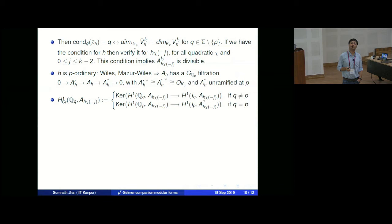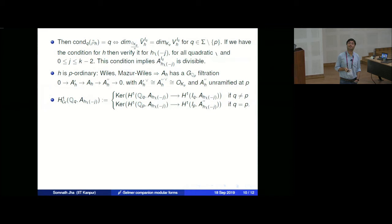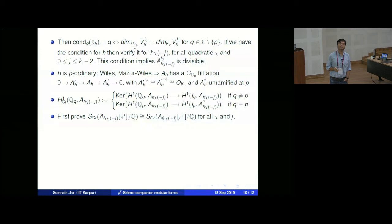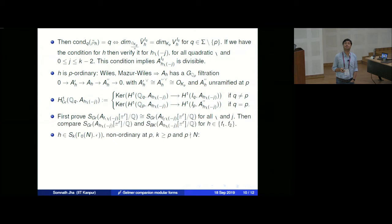The Greenberg condition at a prime Q: if Q is not equal to p, it is like the unramified condition but defined directly with A at the discrete module level. If Q equals p, it is similar but the module A is replaced by A''. We first prove that the Greenberg Selmer group of f_1(χ·ω^{−j}) is isomorphic to the Greenberg Selmer group of f_2(χ·ω^{−j}) for every χ and j, and then compare the Greenberg Selmer group with the Bloch-Kato Selmer group.